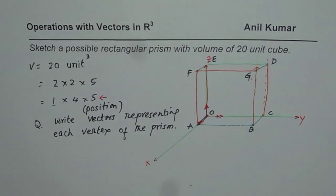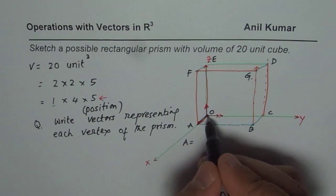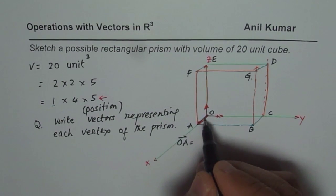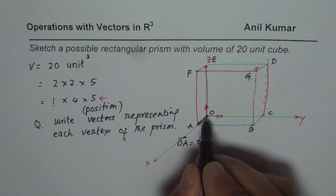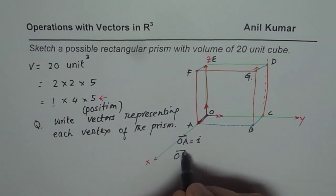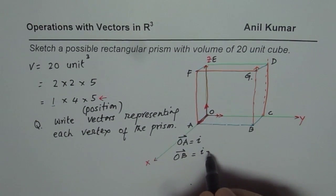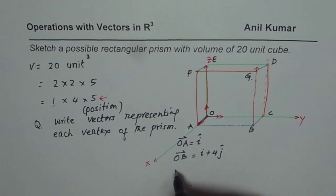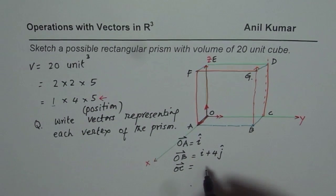What is the location of A, for example? The position vector OA is i. Position vector OB — and OC will equal i plus 4j, since it goes one unit in x and four units in y. The vector OC from O to C is along the y-axis only, so it is 4j.